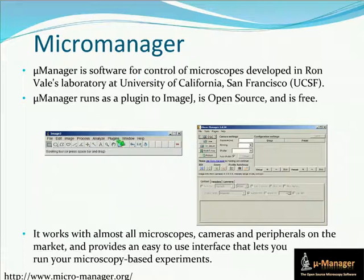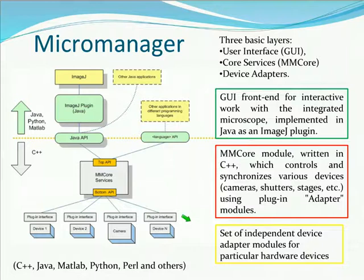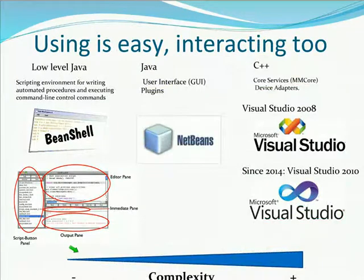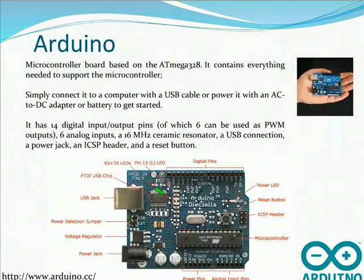Micromanager was developed at University of California and works with almost all devices you can connect to a microscope. It's structured in Java at the top level and C for the core, with device adapters written in C. If a device adapter doesn't exist, you can create one easily by following instructions on the Micromanager website. Don't be scared — you can start with simple Java scripts, create plugins, or build your own software using the available tools.